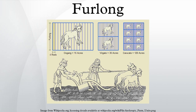The official use of the furlong was abolished in the United Kingdom under the Weights and Measures Act 1985, an act that also abolished the official use of many other traditional units of measurement.